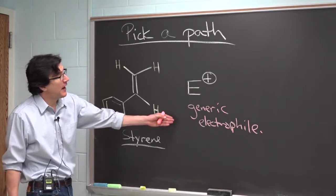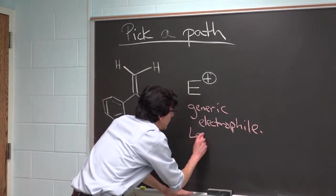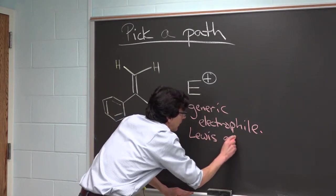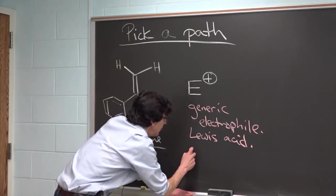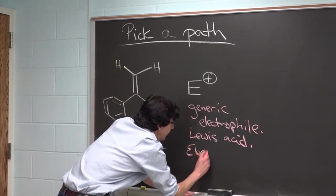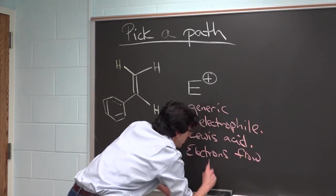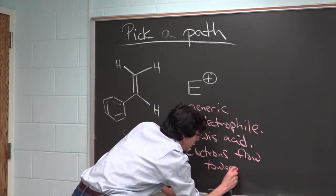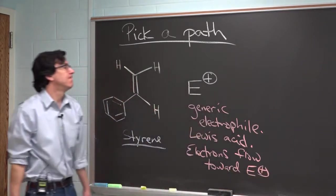An electrophile is a Lewis acid. And that, of course, means that it's an electron pair acceptor. So electrons flow toward the electrophile.